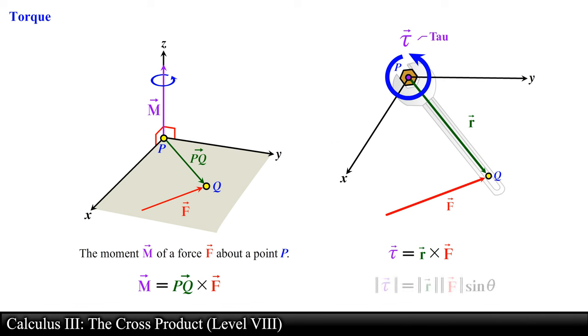The magnitude of the torque vector can be found by using the geometric definition of the cross product. In this case, the magnitude of the torque about the origin will be equal to the magnitude of the position vector r times the magnitude of the force F times sine of the angle between the position and force vector.